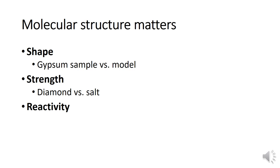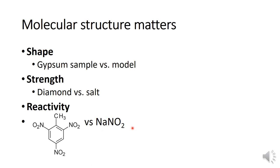Last but not least, here is the idea of reactivity. For example, you have this molecule versus this ionic one — sodium nitrite, no big deal. But this one right here is very explosive. I actually went to the stockroom and asked for trinitrotoluene, and they looked it up and said sorry, we don't carry that. I said that's because it's TNT — it's an explosive. So the reactivity of a solid is influenced by the kinds of bonds it has, specifically these nitro groups, which make the molecule particularly unstable.